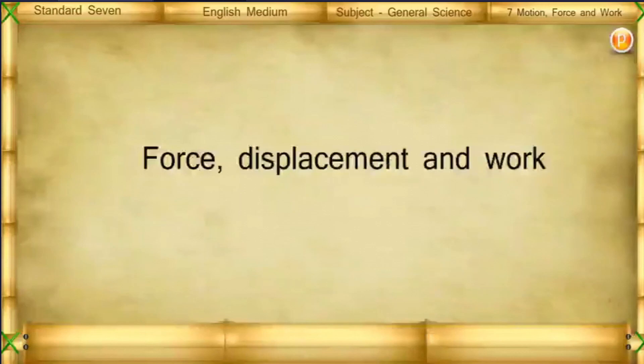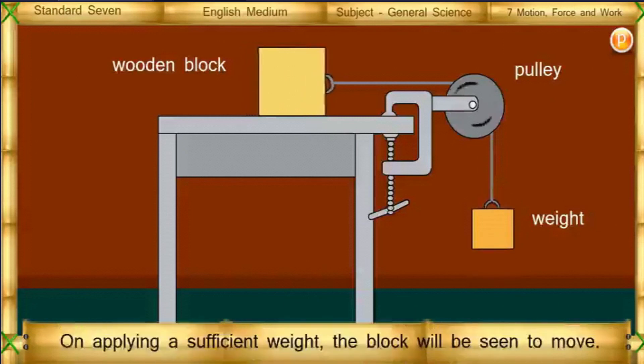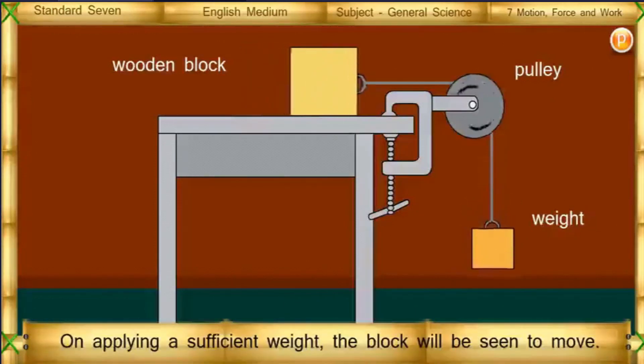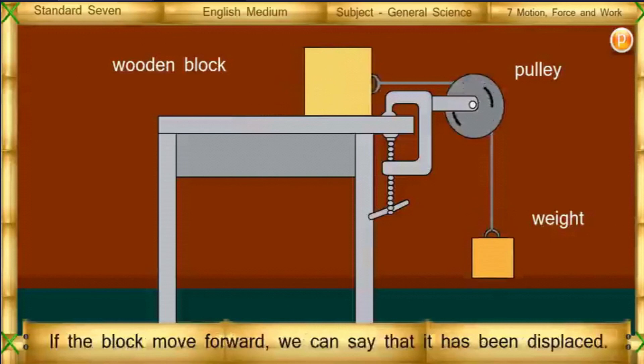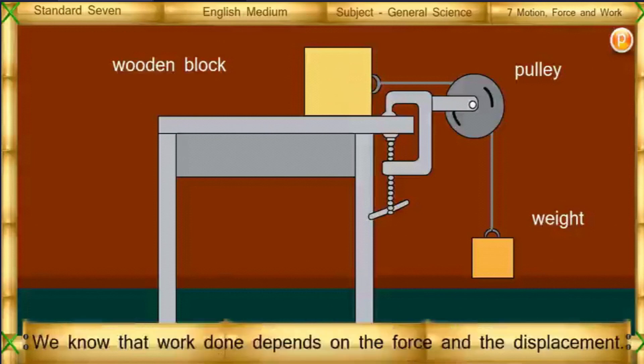Force, Displacement and Work. In the figure alongside, a string attached to the wooden block on a table is passed over a pulley and tied to a weight. On applying a sufficient weight, the block will be seen to move. If the block moves forward, we can say it has been displaced. Due to the displacement, we say that the force has done some work. Can we measure this work? We know that work done depends on force and the displacement.